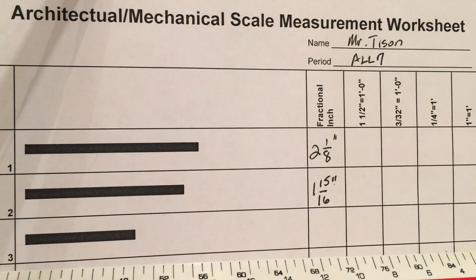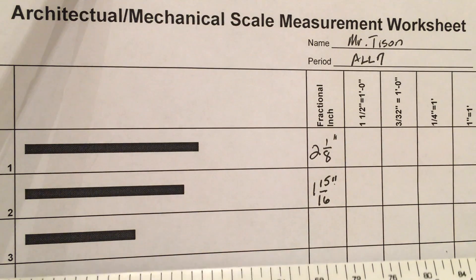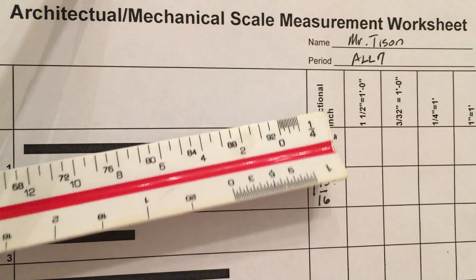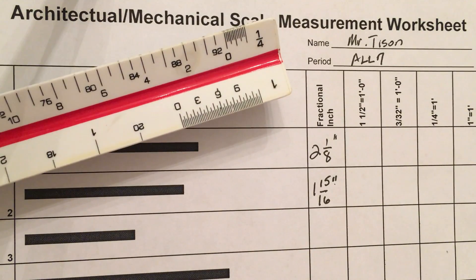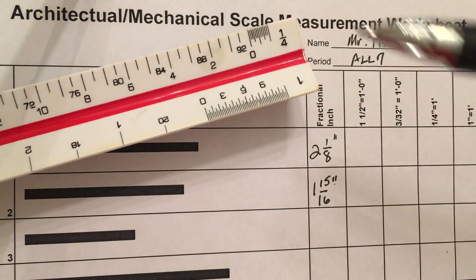Alright, we are going to use the architectural scale and we are going to measure one quarter of an inch equals a foot. So the first thing I'm going to do is get my scale and I'm going to spin it around until I find one quarter of an inch or something that looks like one quarter of an inch and I happen to find it.